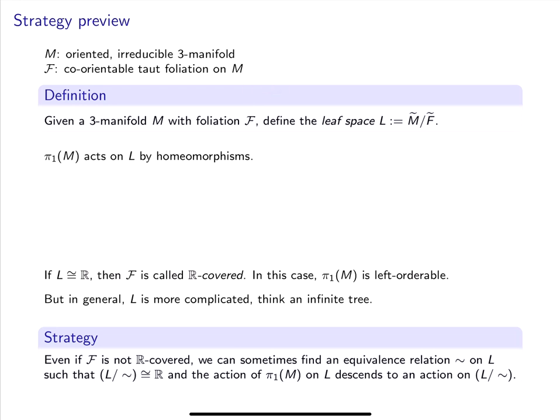Everything in sight today is going to be oriented and co-oriented, so I'll probably stop saying so explicitly. We can lift the foliation to the universal cover and construct the leaf space, L, which I define to be the universal cover modulo the lift of the foliation to the universal cover. So, in other words, the space of leaves of the foliation in the universal cover.